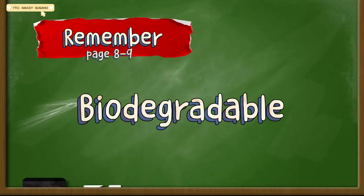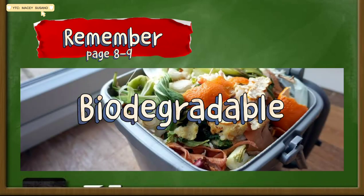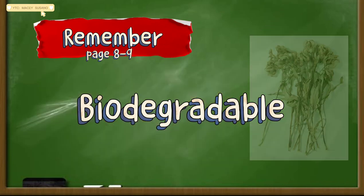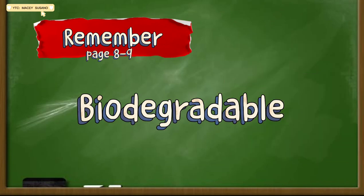Materials that have the ability to decay are known as biodegradable materials. Leftover food, vegetable and fruit peelings, fishbone, dried plants, and dead animals are examples of biodegradable materials.